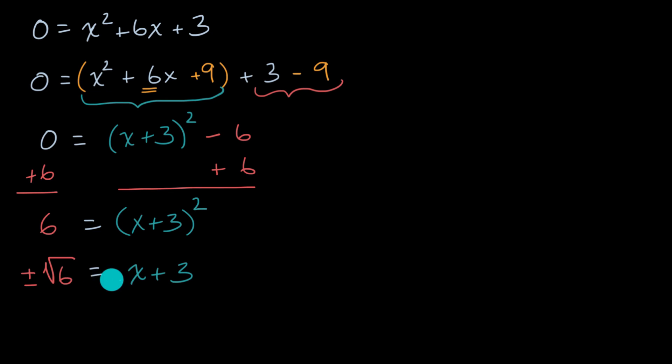And if this doesn't make full sense, just pause the video a little bit and think about it. If I'm saying that something squared is equal to six, that means that the something is either going to be the positive square root of six or the negative square root of six.